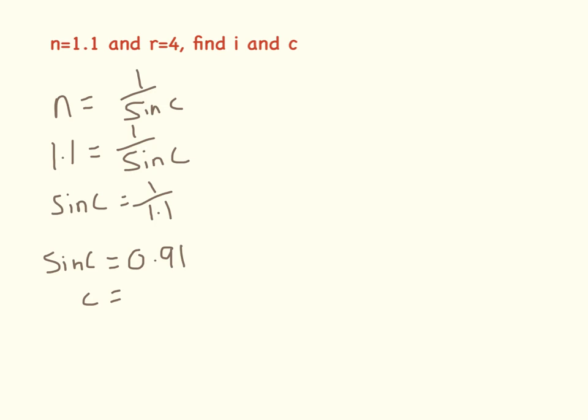So N equals 1.1, R is 4, find I and C. So let's find C first of all because we have the information we need for that. N equals 1 over sine C. So 1.1 equals 1 divided by sine C. So sine C equals 1 divided by 1.1. 1 divided by 1.1 equals 0.91.